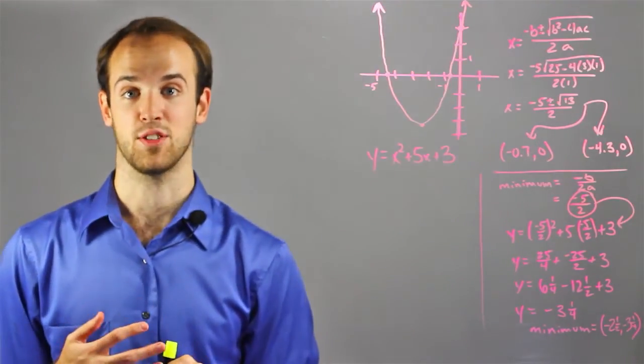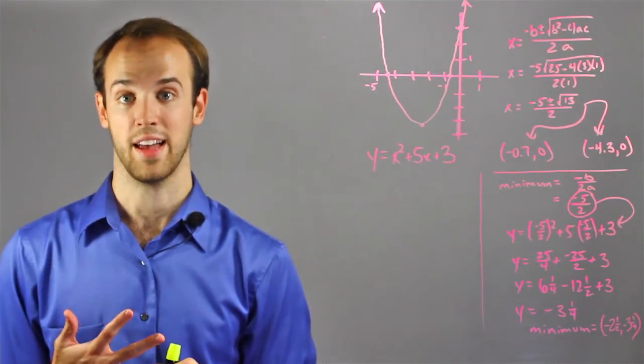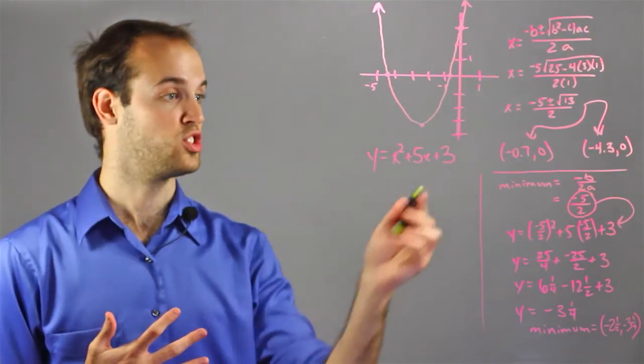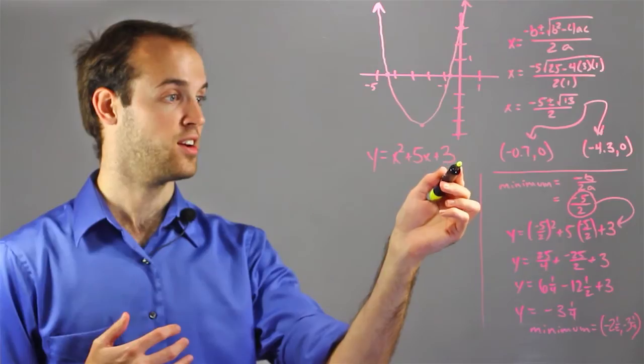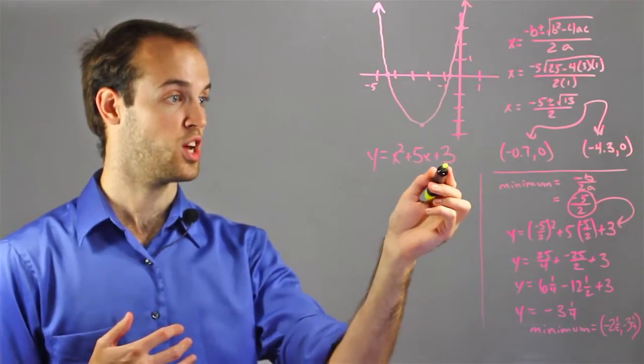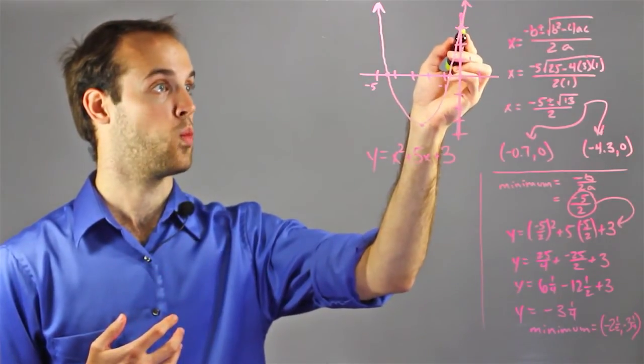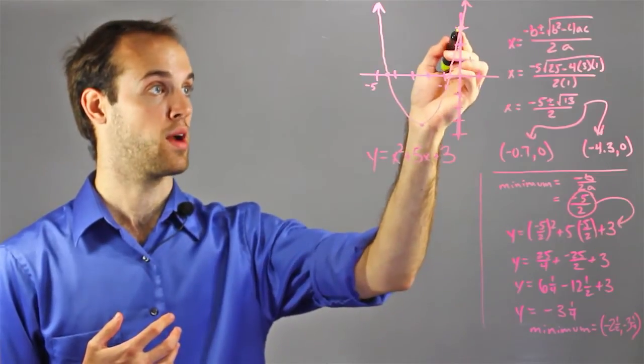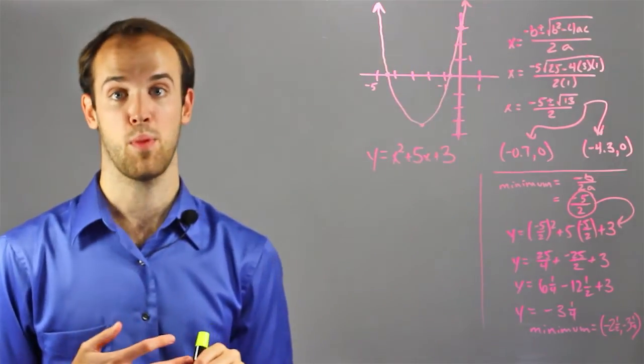So now I have the x-intercepts graphed. Now I want to find the y-intercept, which is a lot easier. It's just whatever number is tacked on here as the c term in this equation. So positive 3, meaning it hits the y-axis at 0 comma 3 right there. So now I've got three points.